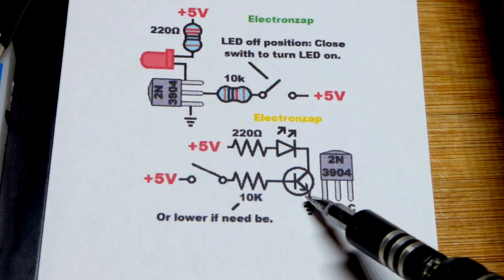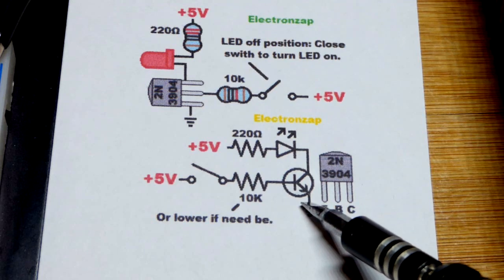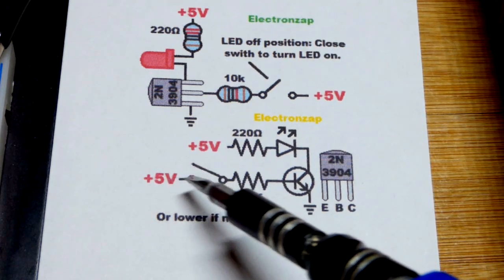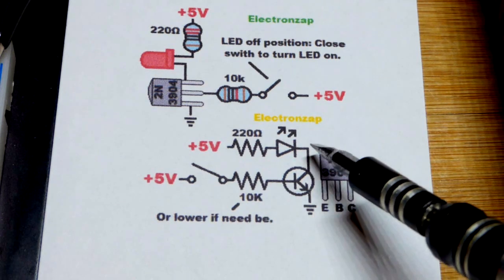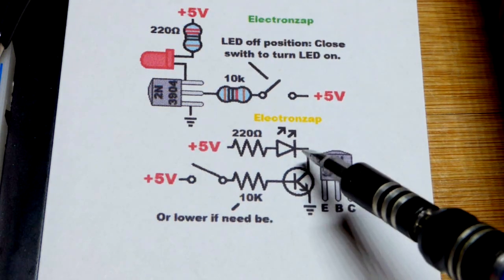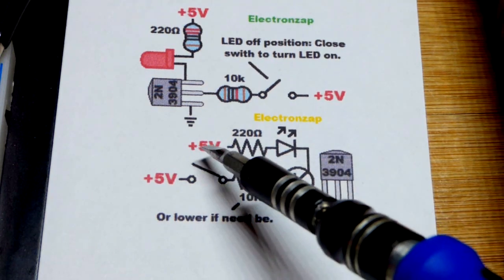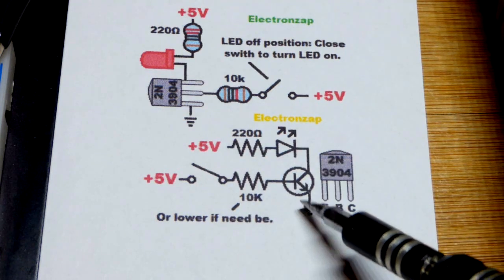Switch open, no base to emitter current, no collector to emitter current. If you got the switch closed here and enough current is flowing through, you don't need very much, then the collector to emitter will conduct fully. And in this case, the LED will turn on.